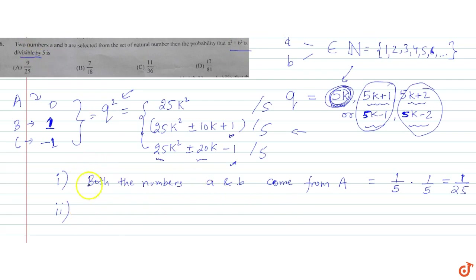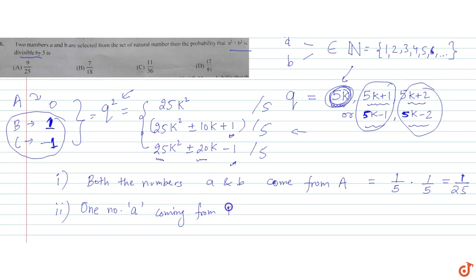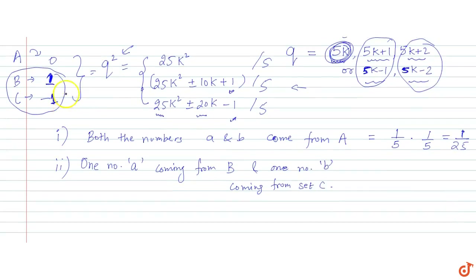Case 2: for the remainder to be 0, we need 1 plus minus 1 equals 0. So one number a comes from set B (remainder 1, containing 2 elements out of 5) and one number b comes from set C (remainder minus 1, also 2 elements out of 5). Since we don't know which is which, we multiply by 2C1, giving 2 times 2 by 5 times 2 by 5, which is 8 by 25.